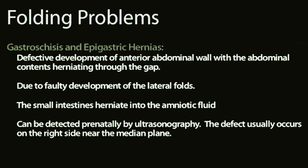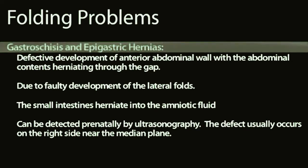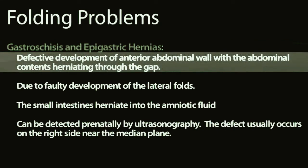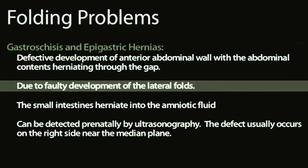There are several folding problems that are really critical to understand for the USMLE Step 1. One is that gastroschisis or epigastric hernias can form. These are due to defective development of the anterior abdominal wall, and the abdominal contents will herniate through these gaps because of faulty development of the lateral folding.